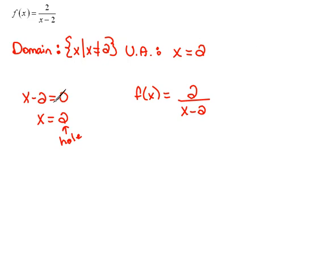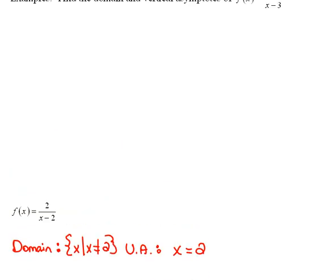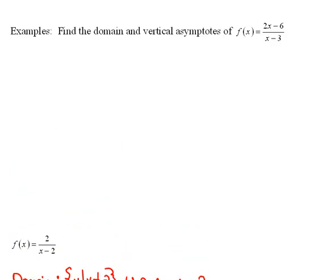Now, this may be a little bit odd, so let's look at another one, and we'll see if we can make it possibly a little bit more clear. Here we have another problem, another function, and we're going to do the same thing. We're going to find the domain, and then also we're going to look at the vertical asymptote.